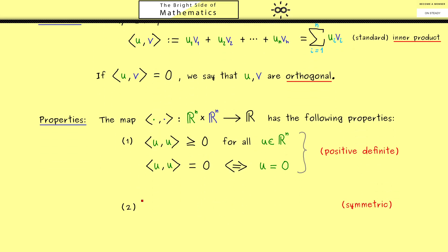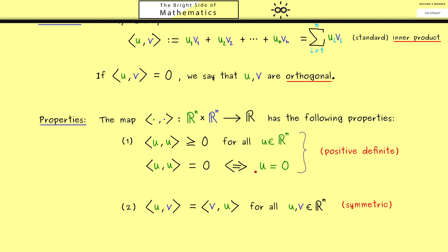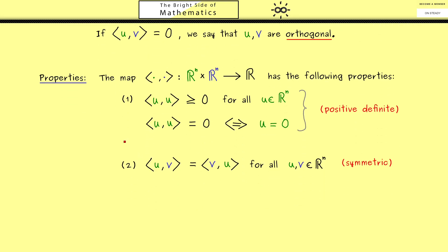The second property is called symmetry. As the name suggests, the order in the inner product does not matter: the inner product of u with v is the same as the inner product of v with u, and this holds for all vectors u and v in Rn. For our standard inner product this is easy to see because multiplication in R is commutative.